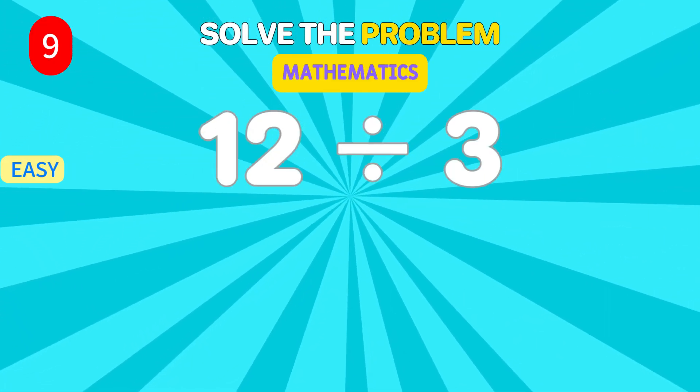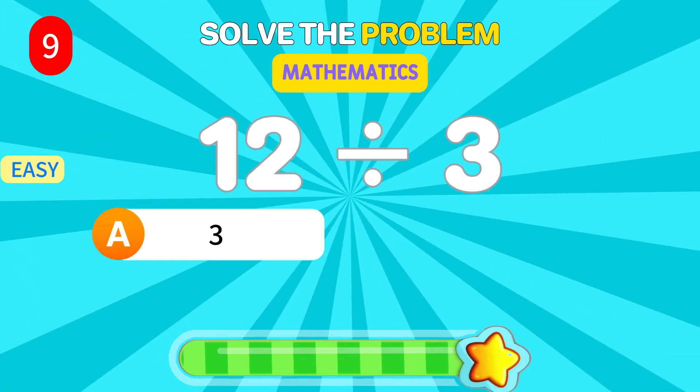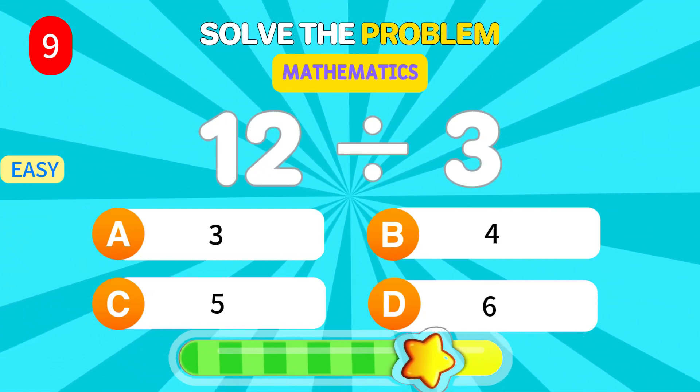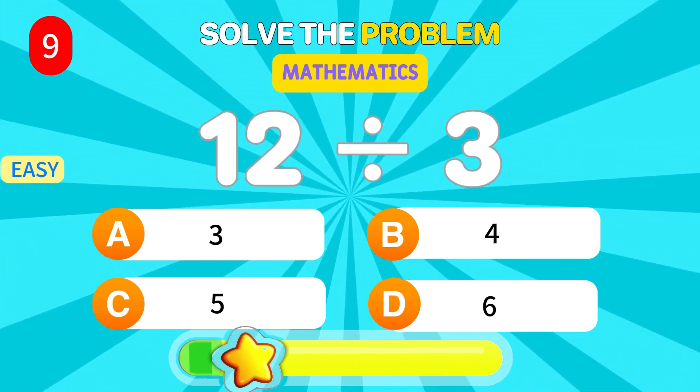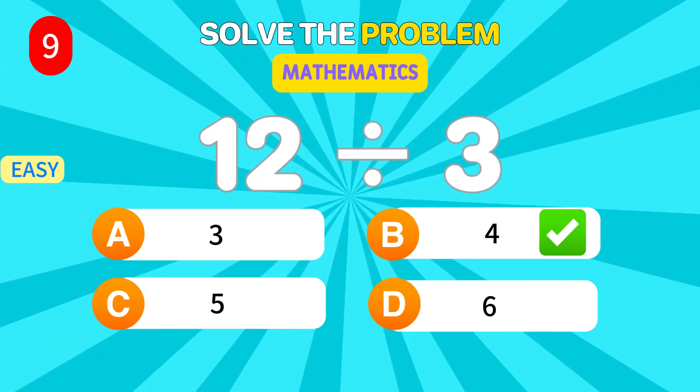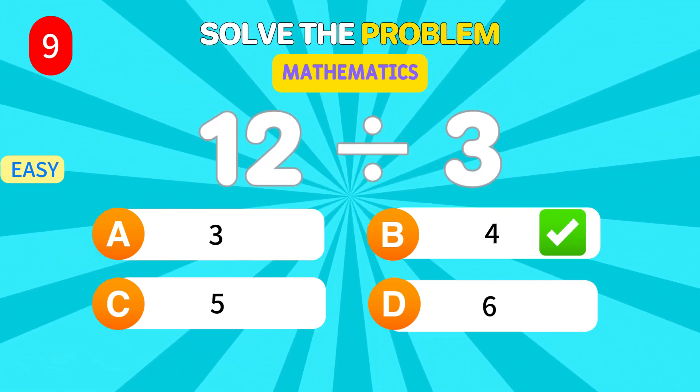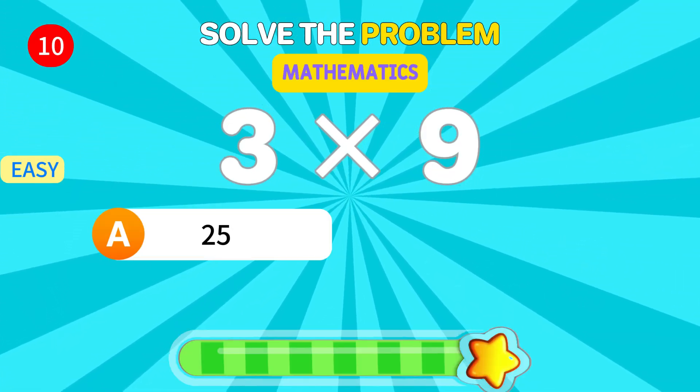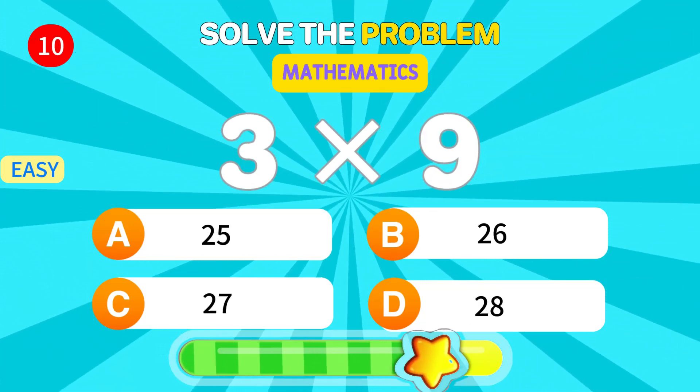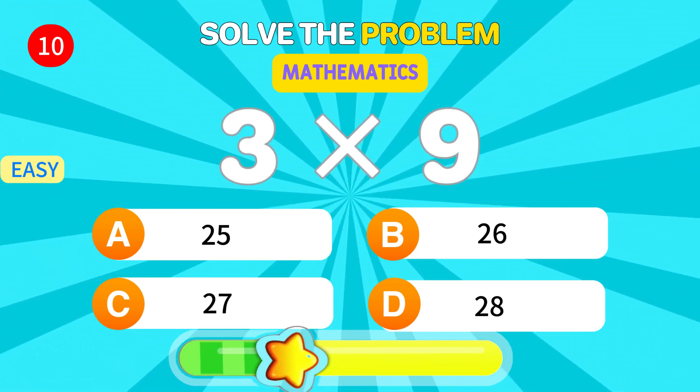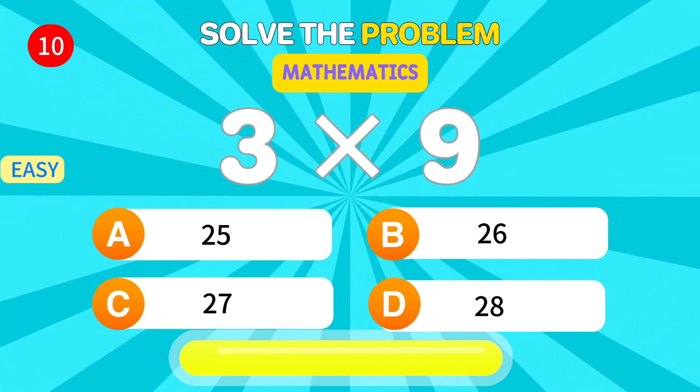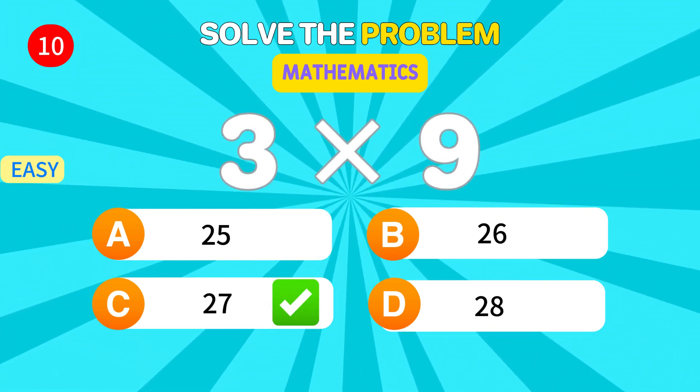What's 12 divided by 3? 4. Correct. How much is 3 times 9? 27. You're doing great.